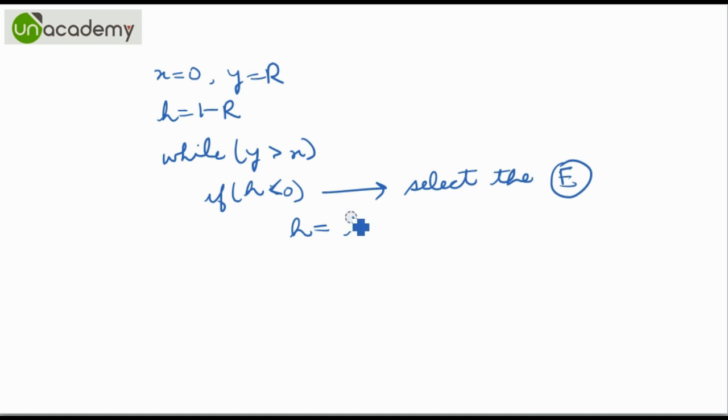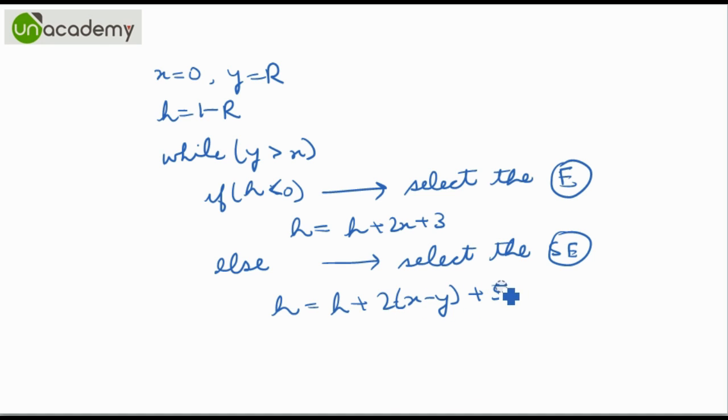And H will be H plus 2X plus 3. Else we will select the southeast point and H will be H plus 2 times (X-Y) plus 5, and Y will be equals to Y minus 1 when we select the southeast point. End the if statement. And we will always increment X equals X plus 1. So this is the basic structure of the algorithm that uses the midpoint algorithm to plot the circle.